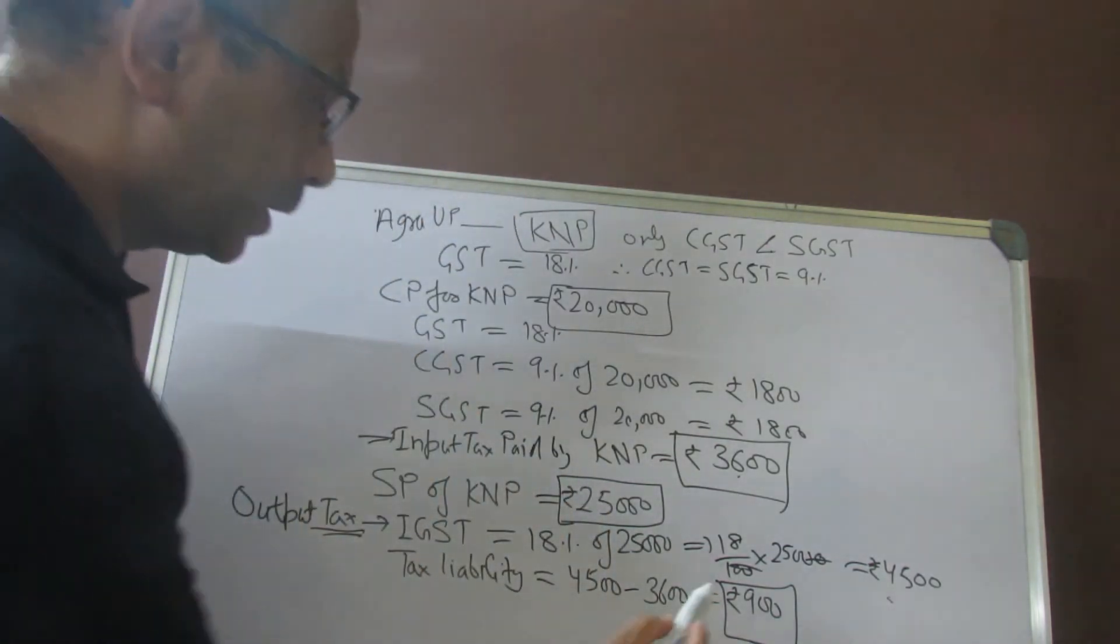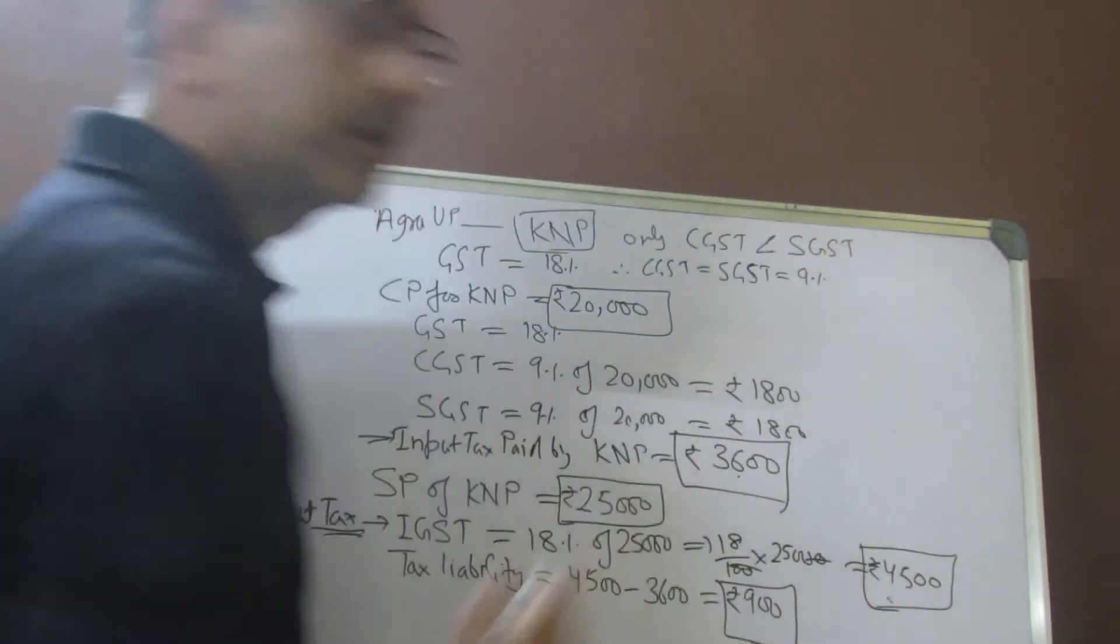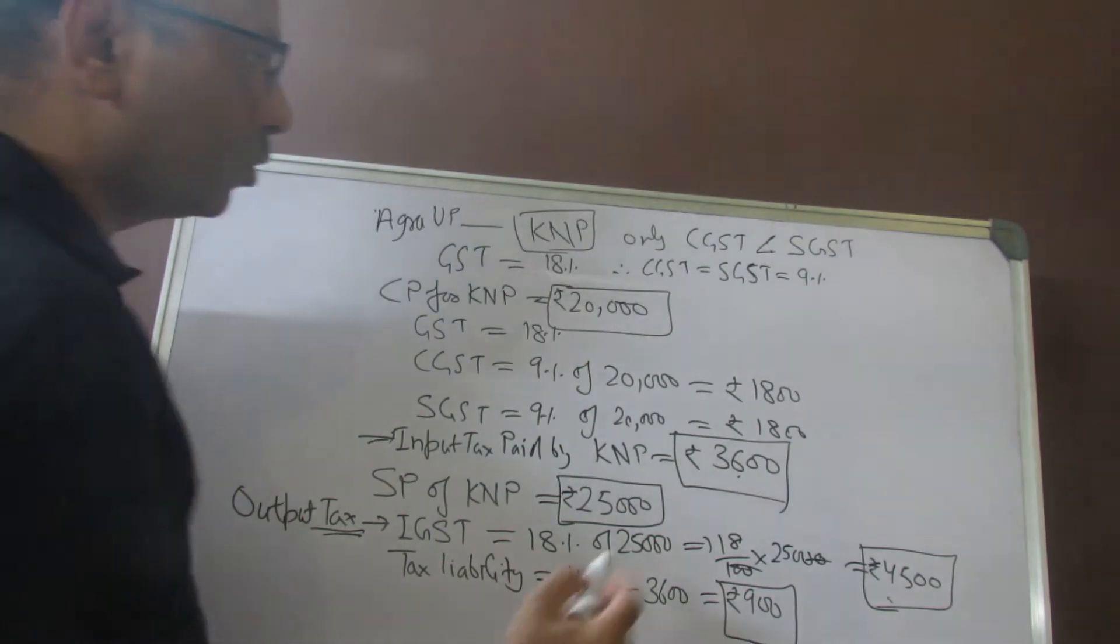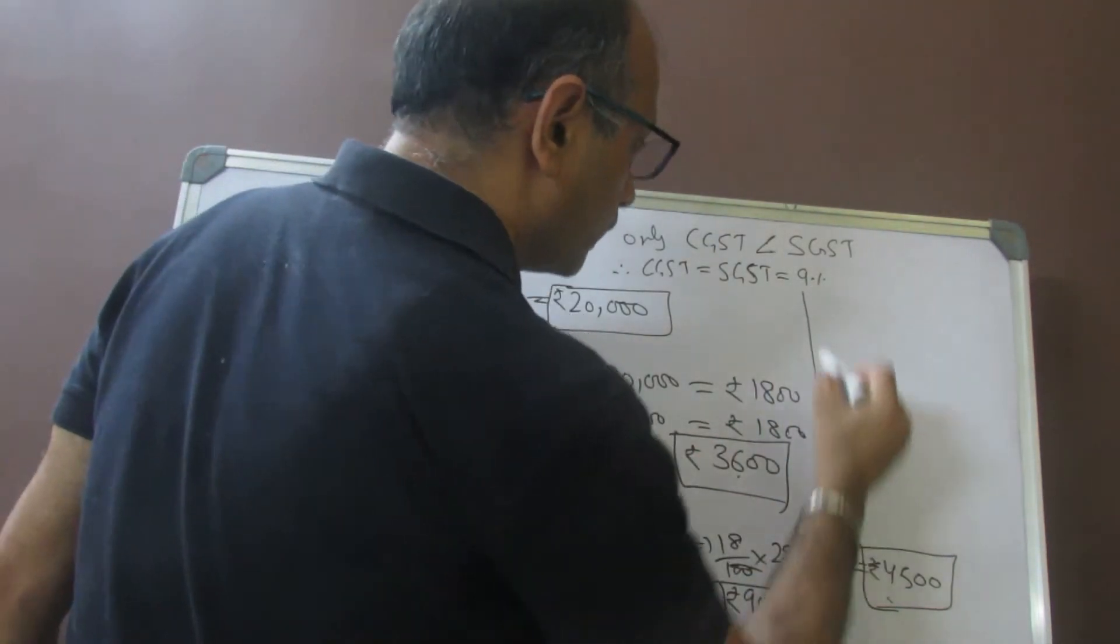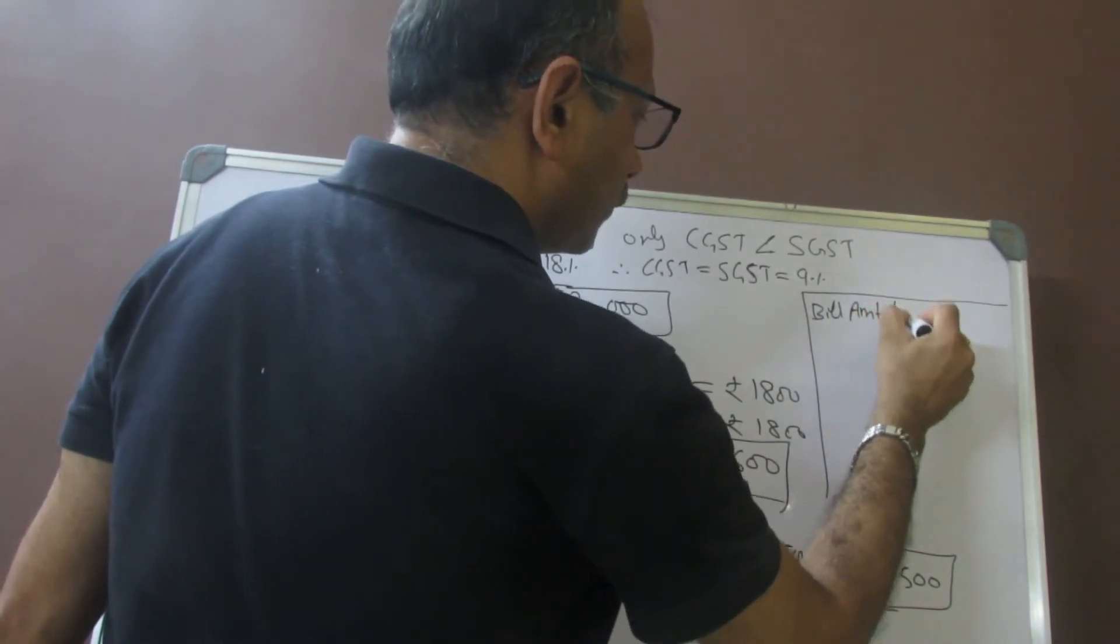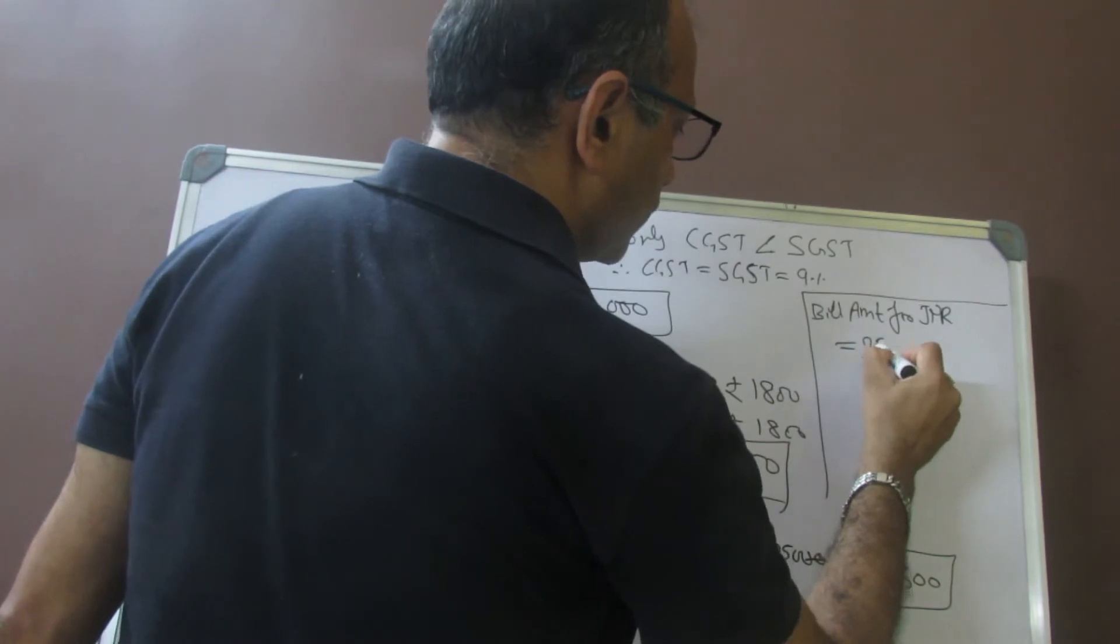So the bill amount for Jaipur dealer would be 25,000 plus 4,500, which is rupees 29,500.